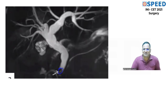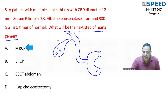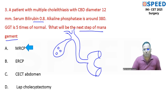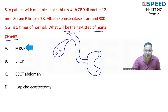MRCP gives exact anatomy of the entire hepatobiliary system — intra-hepatic and extra-hepatic biliary radicals, CBD dilation, and gallbladder stones are all beautifully visualized. For post-cholecystectomy syndrome, the best investigation of choice would be ERCP, as it is both diagnostic and therapeutic. For the given question, MRCP is the best answer.